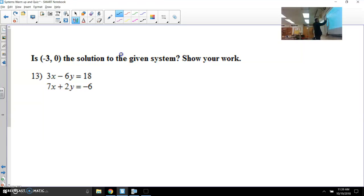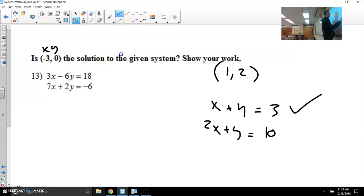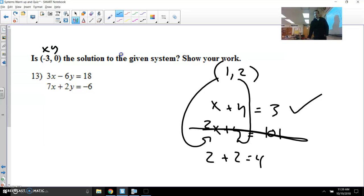If something's a solution, that means x and y should plug in and make everything work. For example, if you said x is 1 and y is 2, x plus y would equal 3. That would make it true. But if in the second one it says 2x plus y equals 101 or something like that, well, 1 times 2 is 2 and you add the other value, that gives you 4, not 101. It has to work for both equations for it to solve the system.